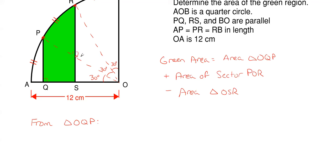So basically what I'm going to have here is I'm going to have my OQ which is my bottom portion will be equal to my radius of 12 centimeters times the cosine of 30 degrees which gives me 6 square roots of 3 centimeters.